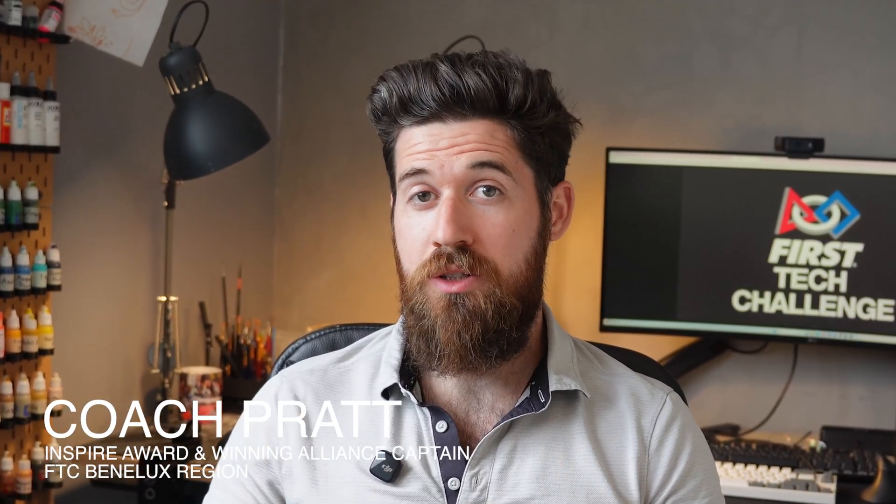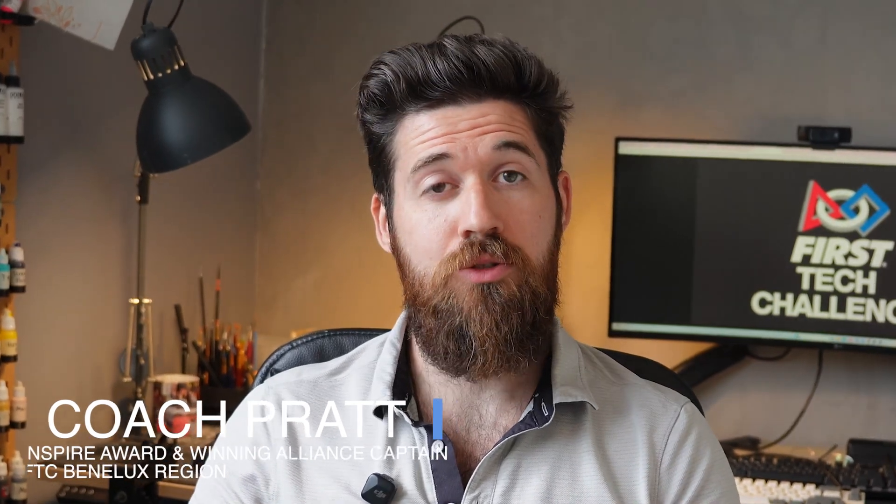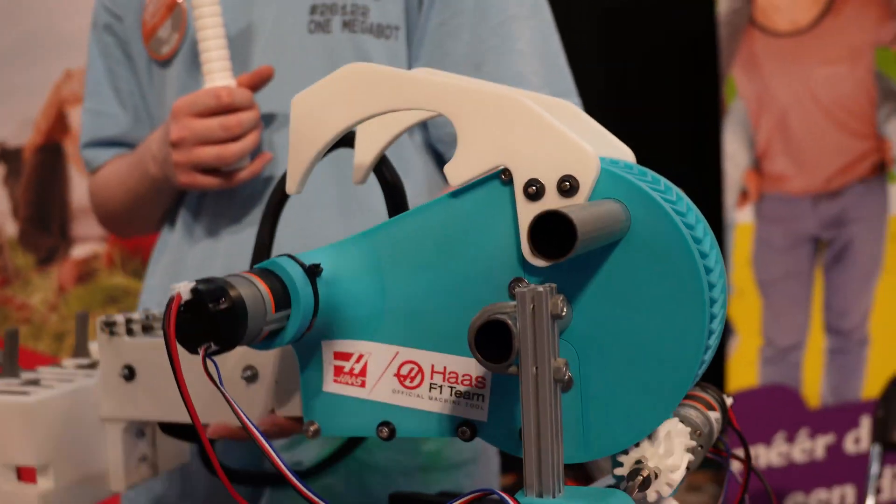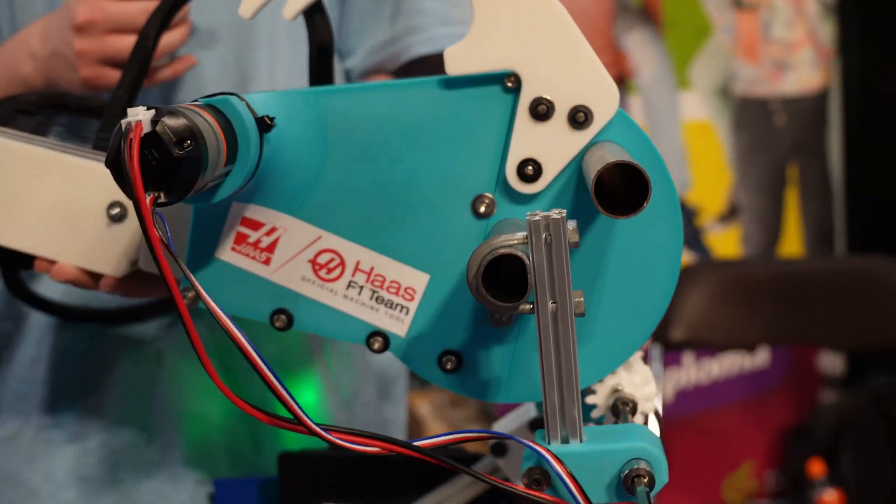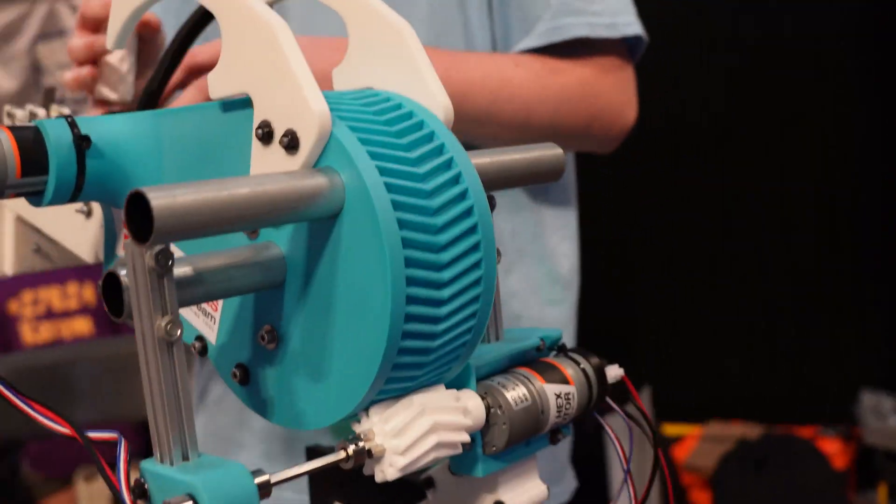The most valuable design lessons don't always come from the world championship robots. They come from seeing how teams create clever, effective solutions to solve complex problems under real-world constraints. We went for the pivoting arm system. We took the design of a team in America, and they also had a different arm system for extending it.